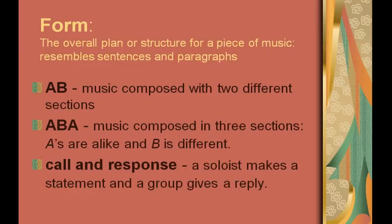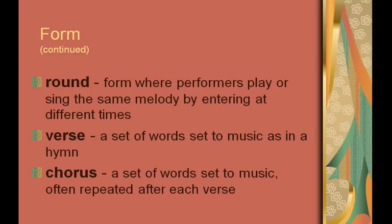Form is the overall plan or structure for a piece of music and resembles sentences and paragraphs. AB is music composed with two different sections. ABA is music composed in three sections — the A's are alike and B is different. Call and response refers to a soloist making a statement and a group gives a reply. A round is a form where performers play or sing the same melody by entering at different times. A verse is a set of words set to music as in a hymn. A chorus is a set of words set to music, often repeated after each verse.